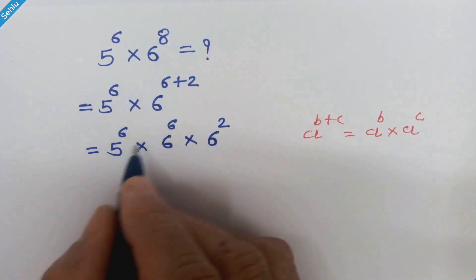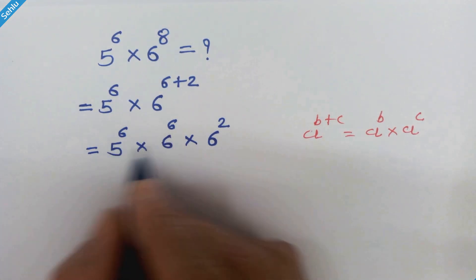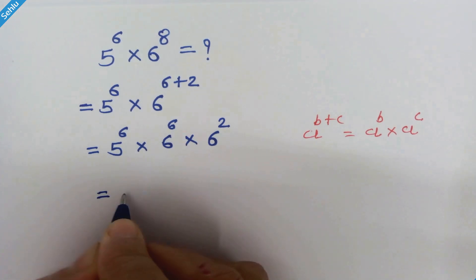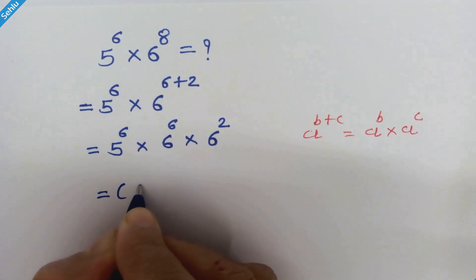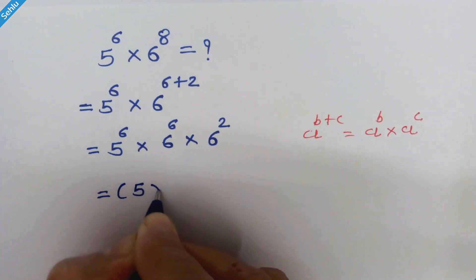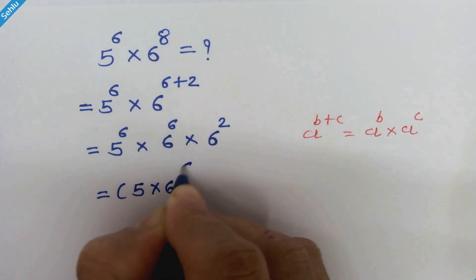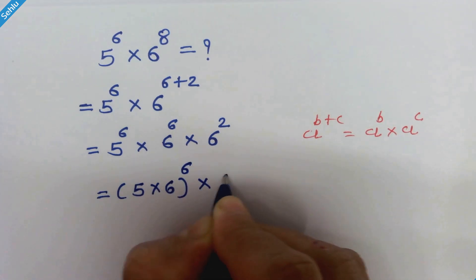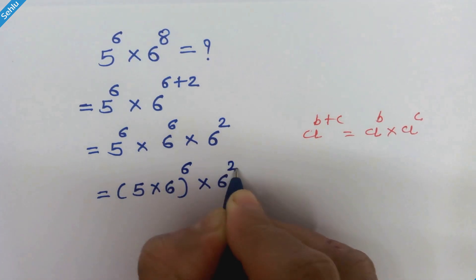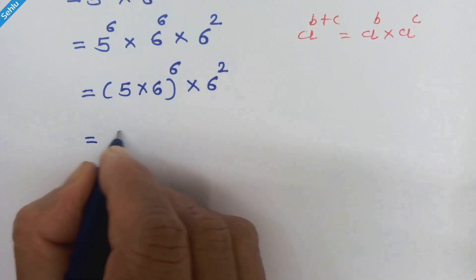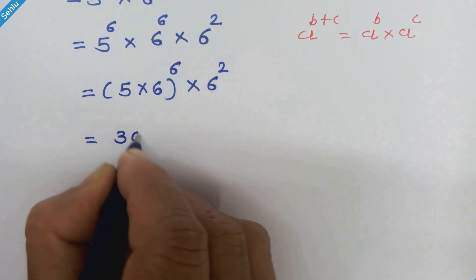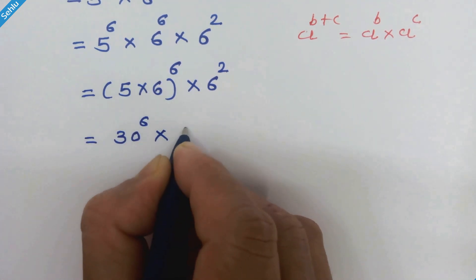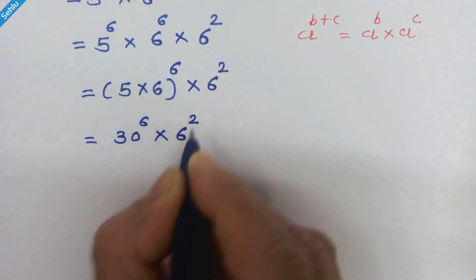Now let's focus on these two — they have the same exponent. So we can write it like 5 times 6 whole raise to 6, times 6 square. 5 times 6 is 30, so we can write 30 raise to 6 times 6 square.